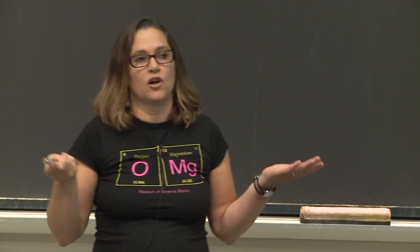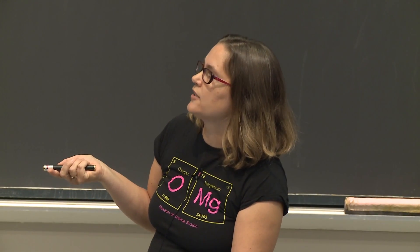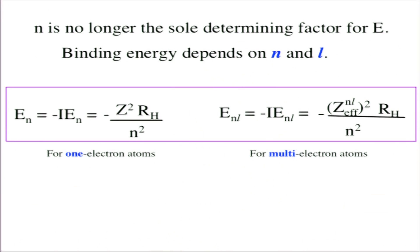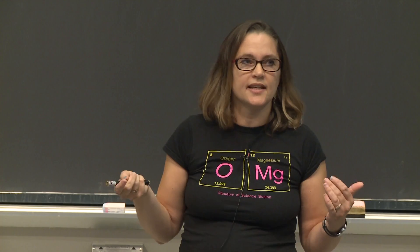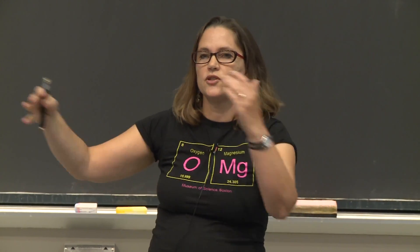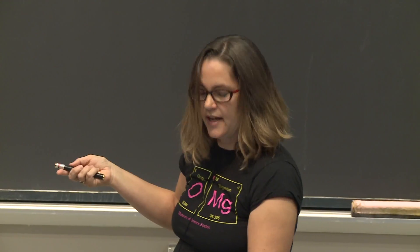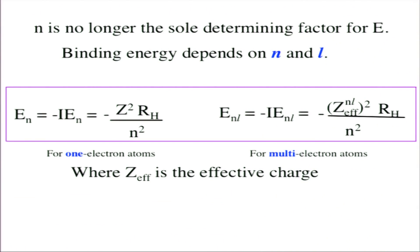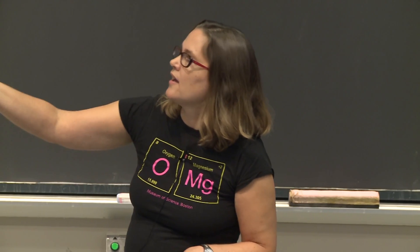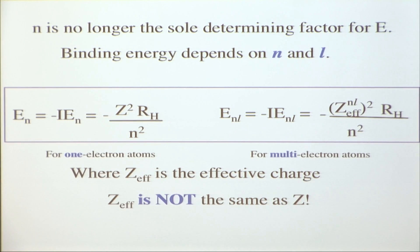For a multi-electron system it looks pretty much the same, but now instead of just n, we have n and l, because l matters. The binding energy equals minus the ionization energy, which equals minus z-effective squared times R_H over n-squared. Z-effective is the effective charge, not the actual charge — abbreviated z_eff. Z-effective is not the same as z because of shielding.